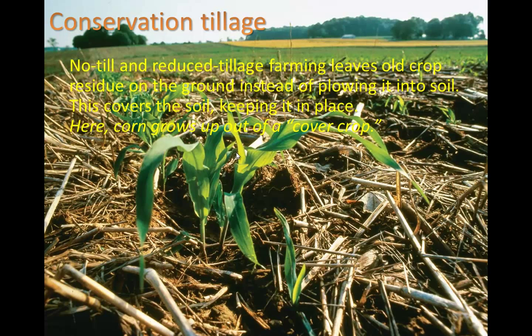Conservation tillage involves no-till or reduced tillage farming, which leaves old crop residue on the ground instead of plowing it into the soil. This covers the soil, keeping it in place. Here corn can grow up out of a cover crop. Rather than tilling — which flips over the top soil and buries everything on the surface — we let it sit on top, where it covers and holds the soil in place. This is now used in half of US agriculture, whereas in the Dust Bowl era, tilling was pretty much standard practice.